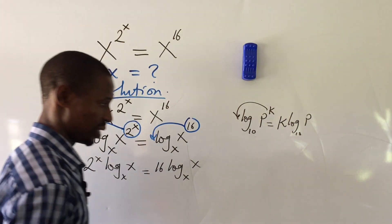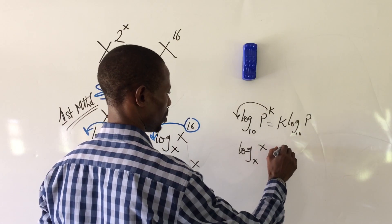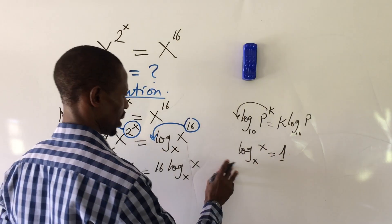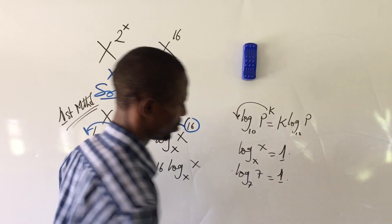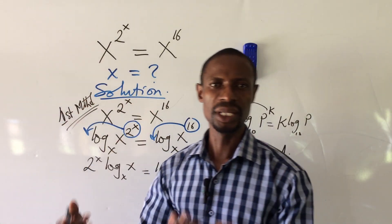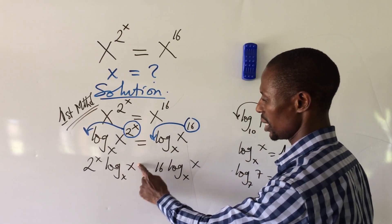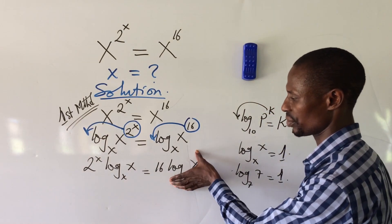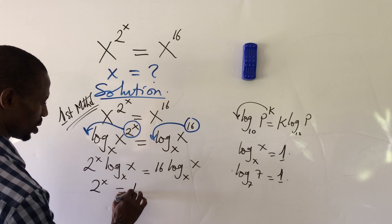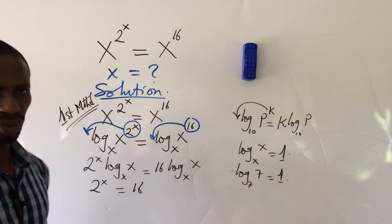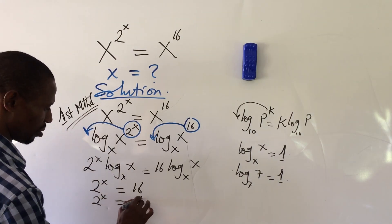Recall another law of logarithms: log base x of x equals 1. So the log of any number to its own base gives us 1. Applying that here, log base x of x on both sides gives us 1. So we're left with 2 to the power of x equal to 16. Now 16 can be written as 2 to the power of 4, so we have 2 to the power of x equal to 2 to the power of 4.